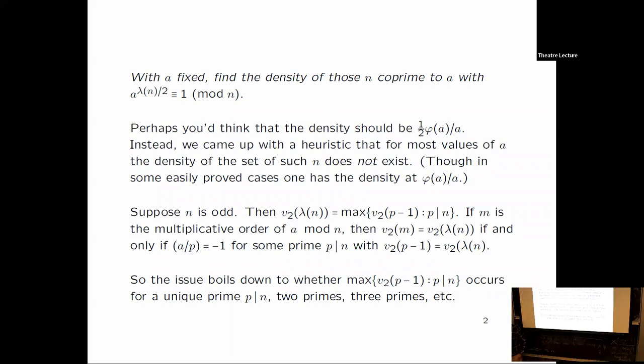The question here is, perhaps the density of integers relatively prime to a is phi of a over a, Euler's function. So you might think it's a half of that. Instead, when I came up with the conjecture that for most values of a, the density of such n does not exist. Though in some easily proved cases, it does exist, and the density is phi of a over a. For example, a case where it's phi of a over a is when a is two.